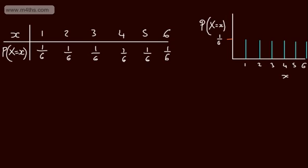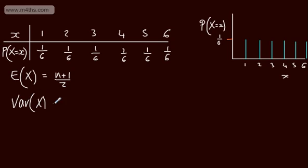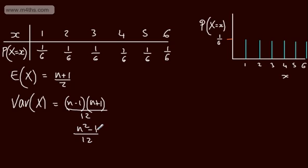Given this uniform distribution, we can quote the following results. The expected value, or mean of x, is going to be n plus 1 over 2. The variance, or Var(x), is going to be n minus 1 multiplied by n plus 1 over 12, or equivalently n squared minus 1 over 12. We don't need to derive these, but being able to use and apply them is essential.